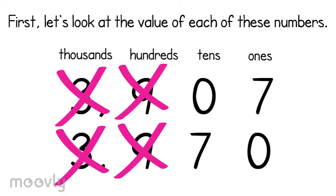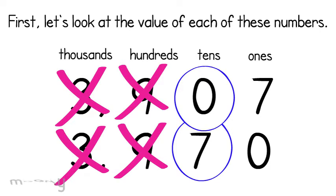Now, I look at my tens place. My first number has 0 tens. My second number has 7 tens. Well, I think this might help me. Which one is bigger, 0 tens or 7 tens?